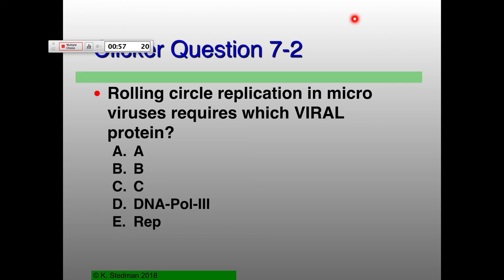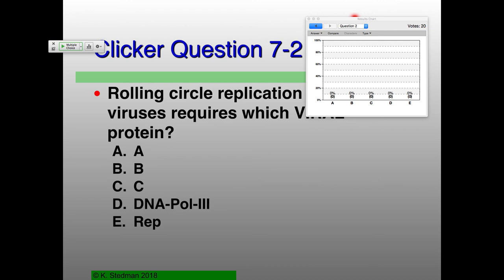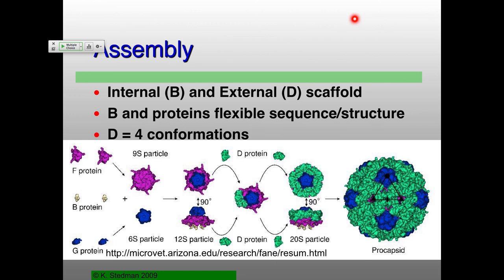The A protein which is involved in this. The B protein? Scaffolding protein — we'll talk more about it in just a second. C protein — have we talked about that at all? No. DNA Pol III and Rep are both cellular proteins, so they're not viral proteins.